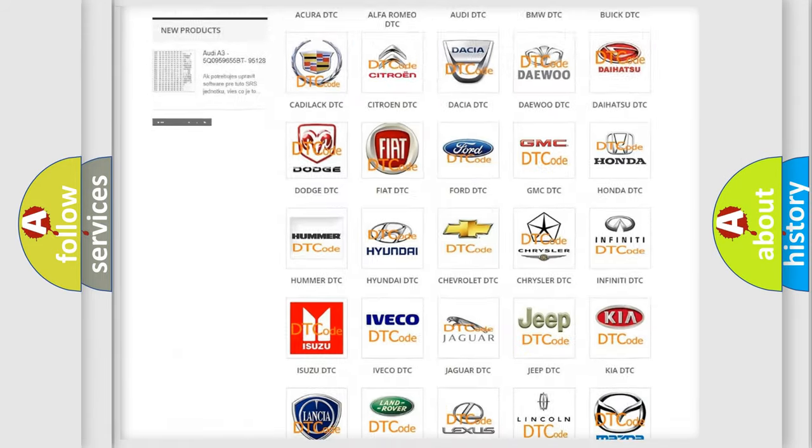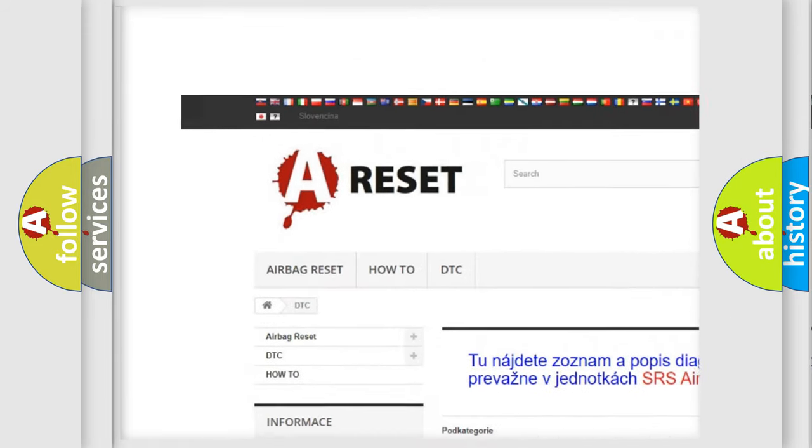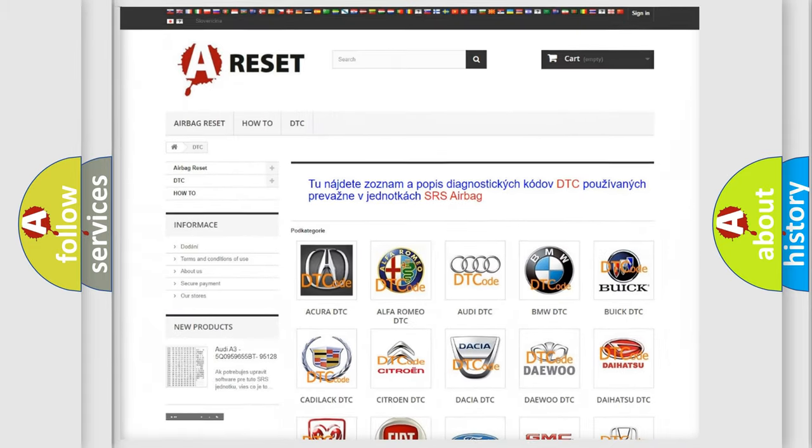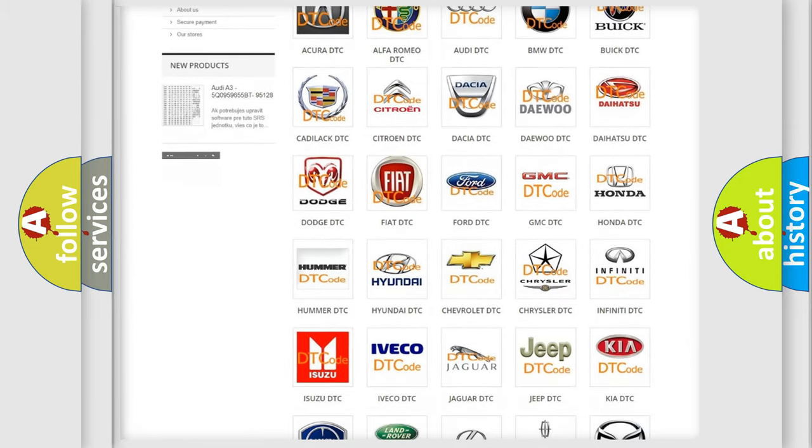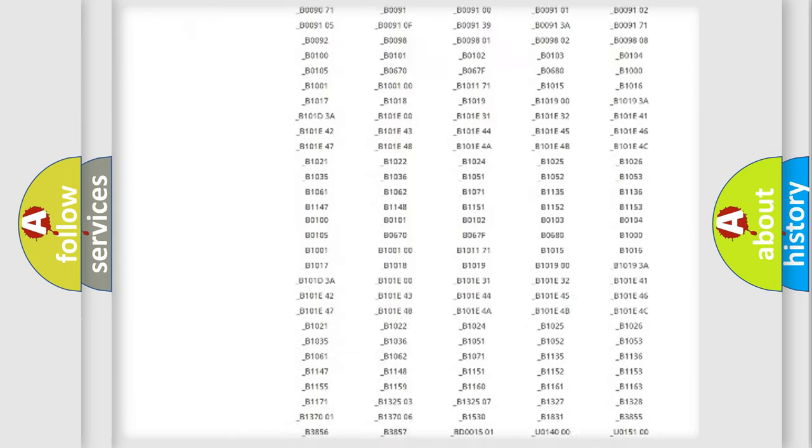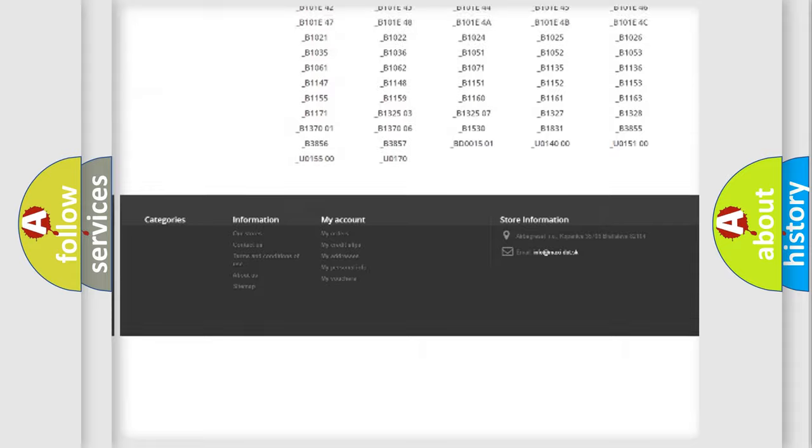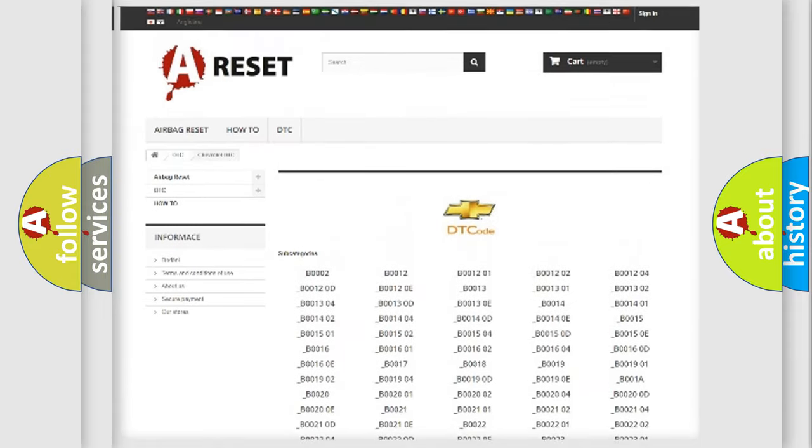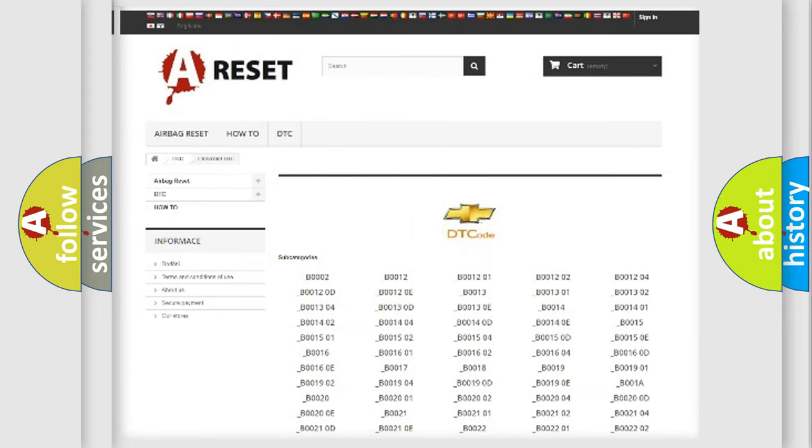Our website airbagreset.sk produces useful videos for you. You do not have to go through the OBD2 protocol anymore to know how to troubleshoot any car breakdown. You will find all the diagnostic codes that can be diagnosed in Chevrolet vehicles, and many other useful things.